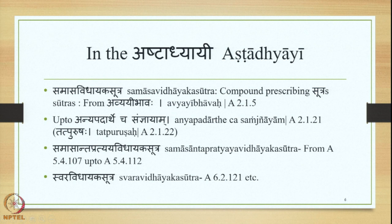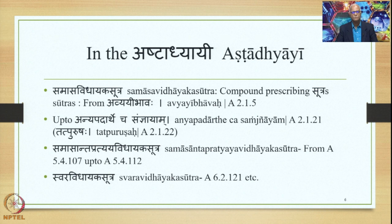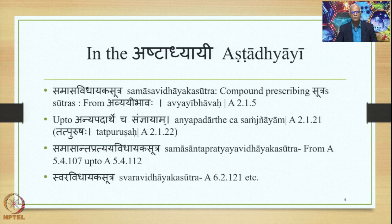In the Ashtadhyayi, the Avyaibhava Samasa is treated at different places. First, we have the Samasa Vidhayaka Sutras, generally stated in 2.1 and 2.2. As far as the Avyaibhava Samasa is concerned, they are stated from 2.1.5 up to 2.1.21. 2.1.5 is Avyaibhava and 2.1.21 is Anyapadarthecha Saudhnyayam. Incidentally, 2.1.22 is Tatpurushaha, and from this sutra onwards the Samasa Vidhayaka Sutras related to the Tatpurusha Samasa are stated — we have studied them in detail in the first course on Samasa in this series.